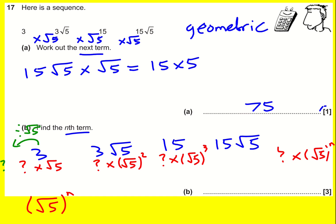When I divide by root 5, I'm left with 3 over root 5. That will be what my zeroth term is, and that's my question mark. So it's going to be 3 over root 5 multiplied by root 5 to the n.